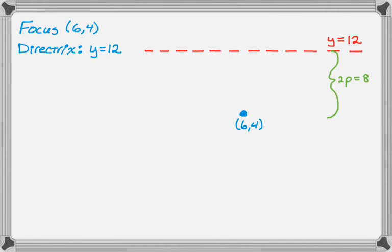Once I know what p is, p is 4, I can find the vertex. So I'm going to move halfway between them, so that takes me to the point (6,8). And knowing that, I now know the vertex is (6,8). So let's mark that down.